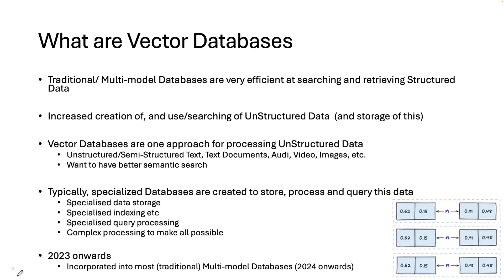When we start looking at vector databases, they're a little bit different to our traditional multi-model databases, which are really efficient at searching and retrieving structured data. So if I want to find all the records that have the name Brendan, it's really good at doing that kind of structured matching.